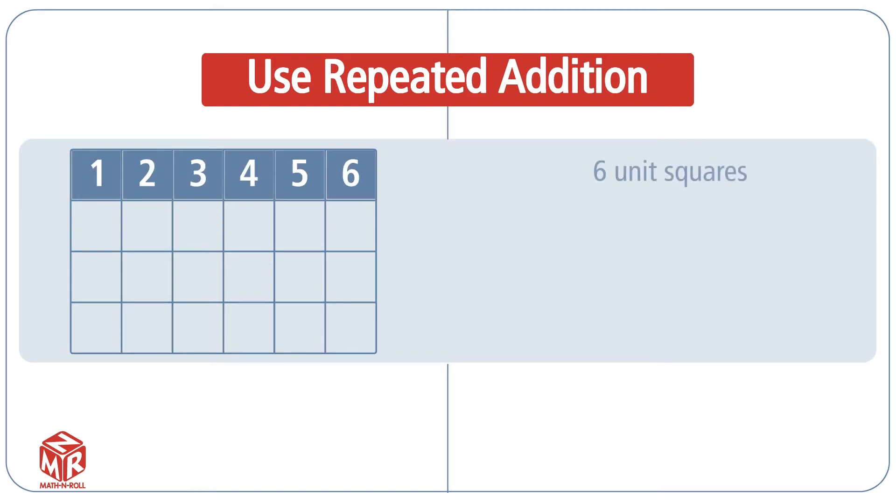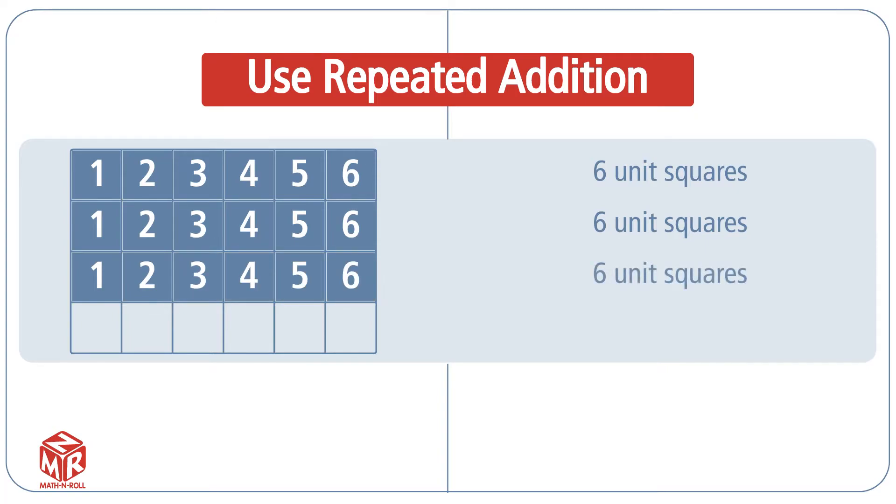We have 6 unit squares in the first row, 6 in the second, 6 in the third, and 6 in the fourth.